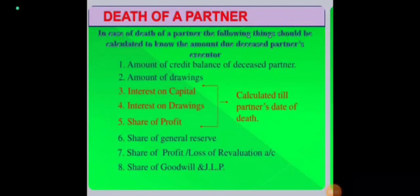Good morning students. In today's video we are going to discuss the event of death of a partner. Death of a partner is uncertain and it can occur at any point of time — it cannot be scheduled as the retirement of partners can be scheduled with the discussion of other partners. In case of sudden death of a partner, we have to close his account and give all his dues in the firm to the executor or the legal representative of the deceased partner.